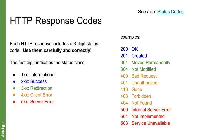Status codes starting with 2 are success codes. Codes beginning with 3 indicate redirection, which isn't necessarily bad. Codes in the 400s mean there's something wrong with the client's request, and 500 codes mean something went wrong on the server side — such as your database going down. The key thing is you should use the correct status code to represent what's happened on your server.